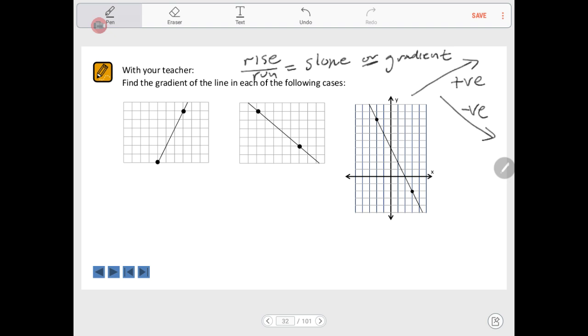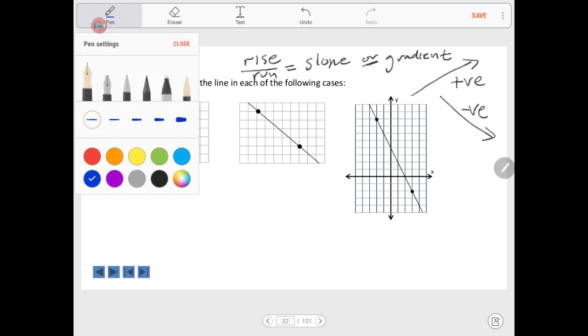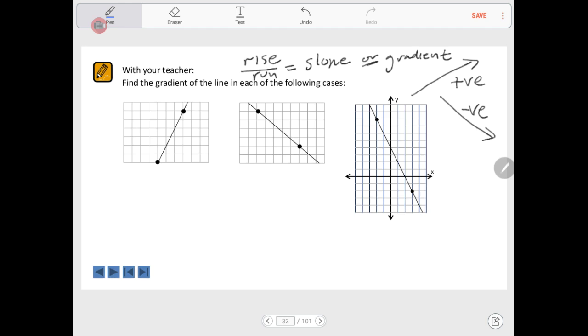If we look at this first example on the left, we have two points on the line. It wouldn't matter which two points we chose—we'll always get the same gradient because we're on the same line. So it doesn't matter what points you choose,